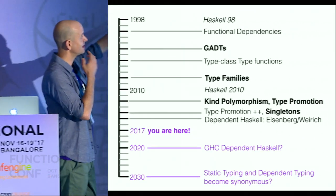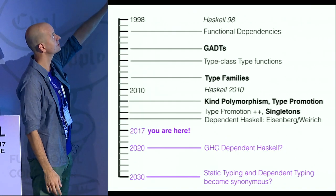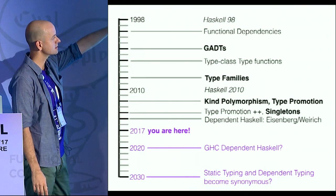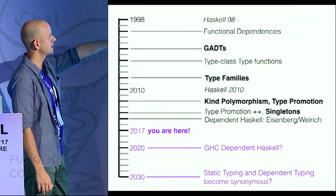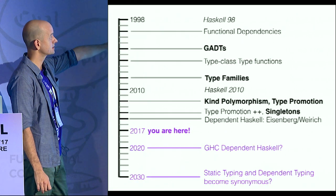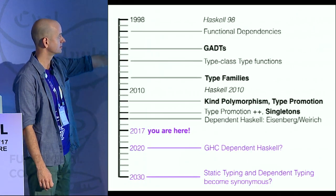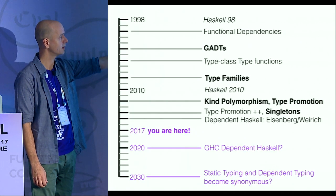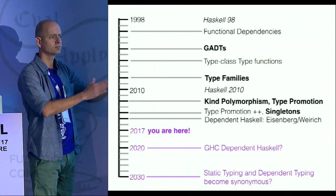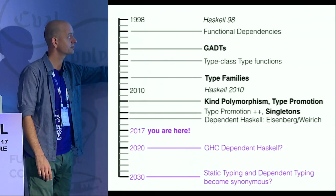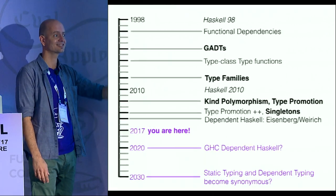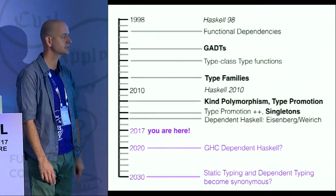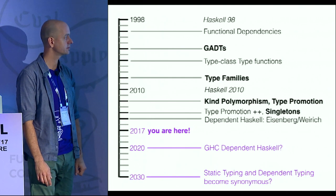A historical sweep: Haskell 98 was finalized around 2000 and documented in 98. GADTs came in 2003. Type families in 2008. Type promotion — very recent — 2012. Singletons also 2012. Type promotions went through a few iterations, the last big one when I was here last. This dependently typed thesis was written and published at the end of 2015.